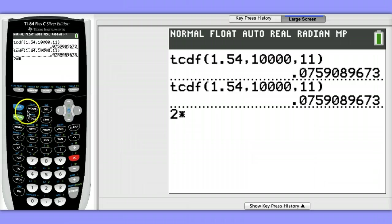So I'm going to do two times tcdf. And because I'm interested in the area to the left of negative 3.17, my lower bound is negative infinity, technically, but negative 10,000 should be sufficiently small.